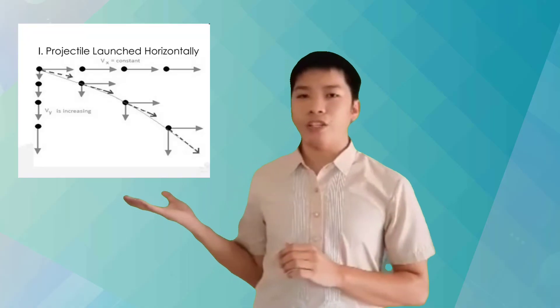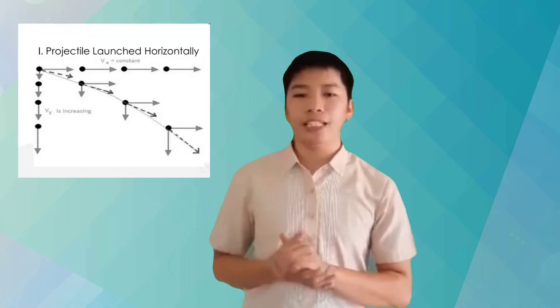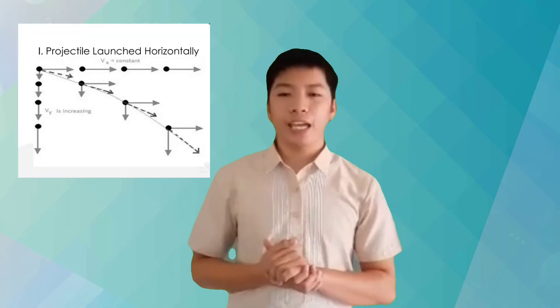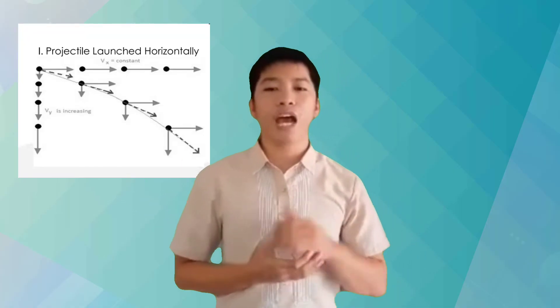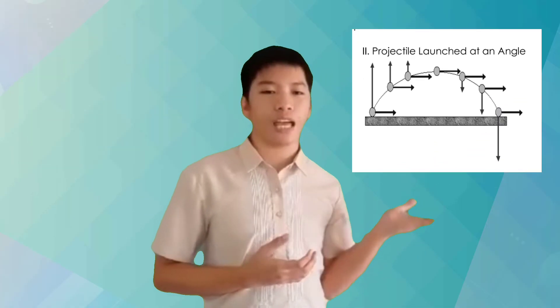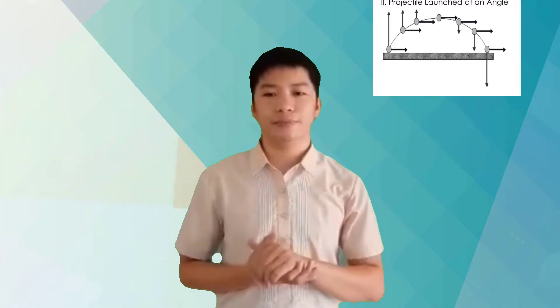There are two types of projectile motion. First is a projectile launched horizontally, and we also have the projectile launched at an angle.